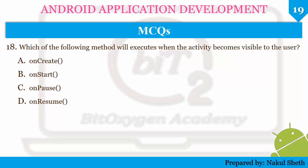Next question: after execution of the finish method, an activity will be in Running state, Pause state, Stop state, or Killed state? The correct answer is Killed state. Next question: which of the following method will execute when the activity becomes visible to the user? The options are onCreate, onStart, onPause, or onResume. The correct answer is onStart.